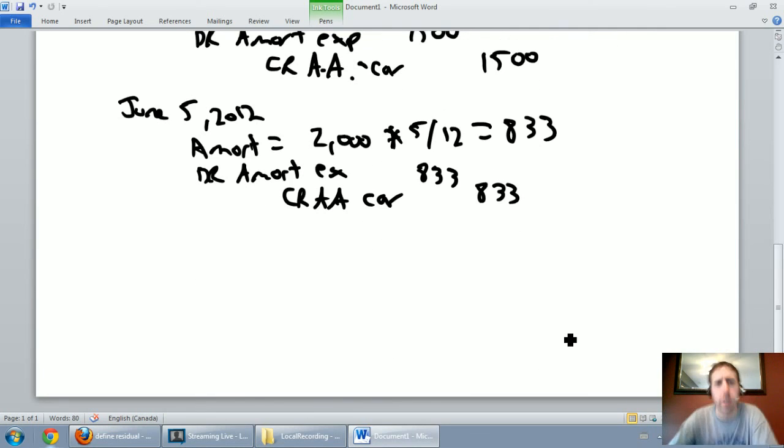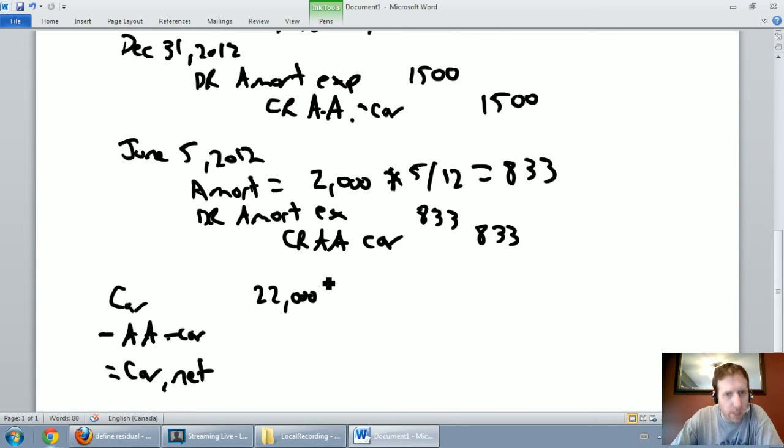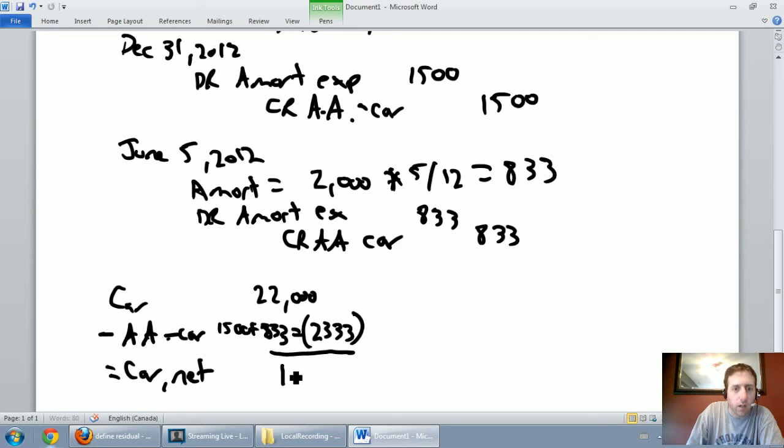Now might be a good time to check in on the value of our car according to our books, our book value. The book value of our car is the cost minus the accumulated amortization. Our car was worth $22,000 when I bought it. My accumulated amortization, that's built up amortization, is $1,500 plus the 833. According to my records, my car is worth $22,000 minus the $2,333 in amortization. My car is worth $19,667. That's the net book value of my car.